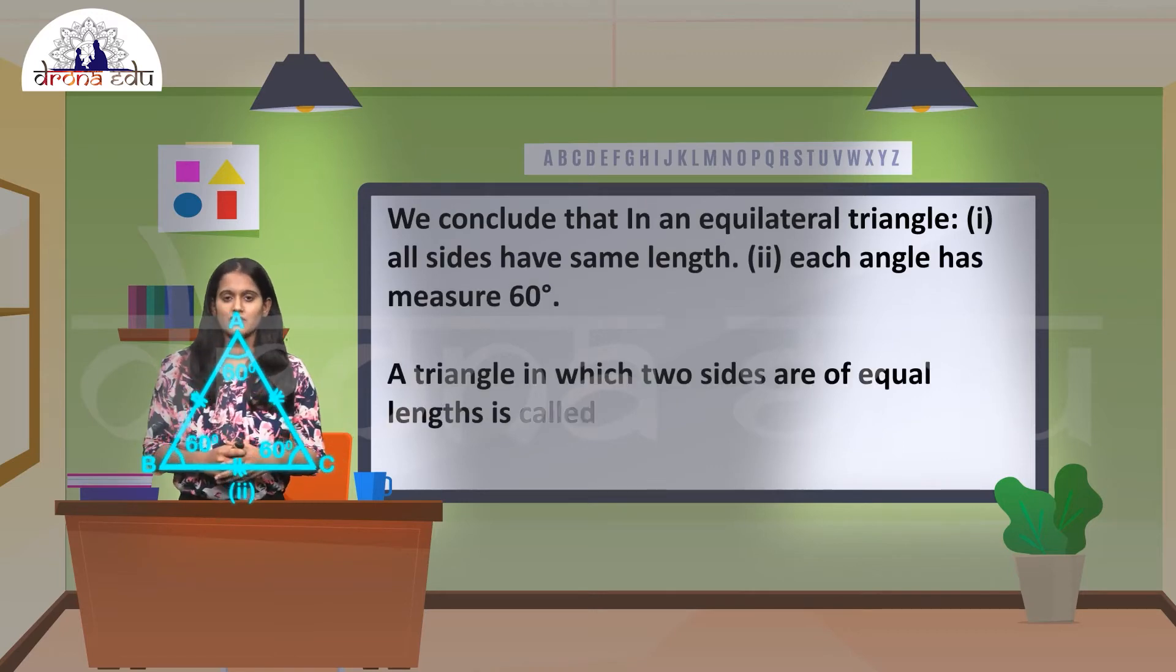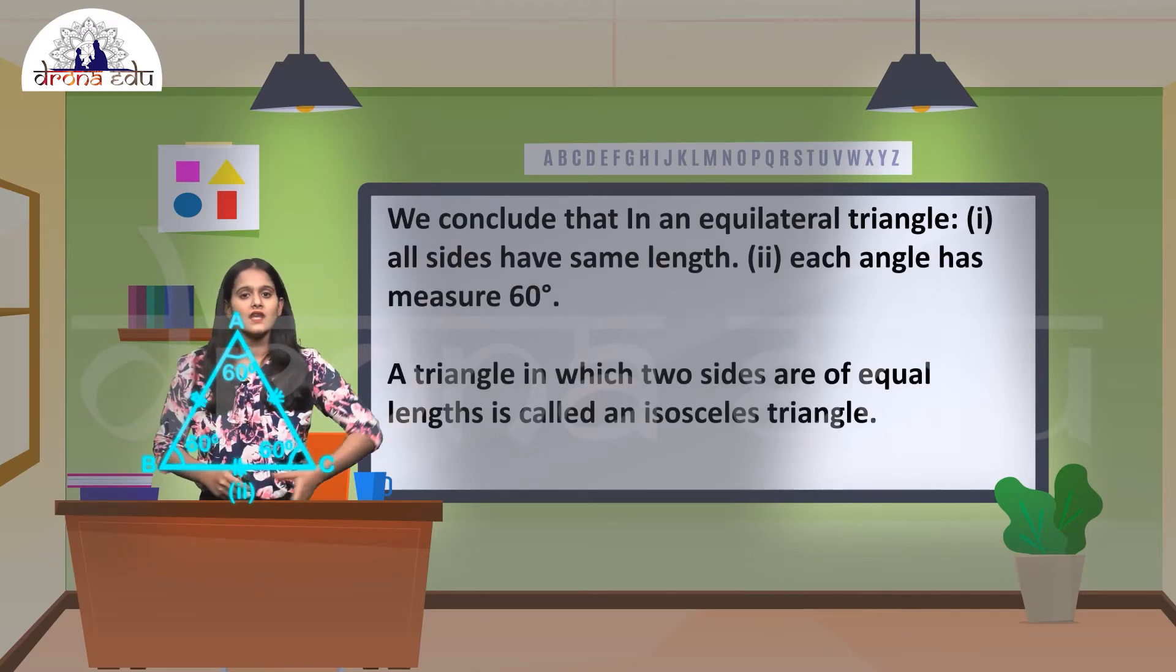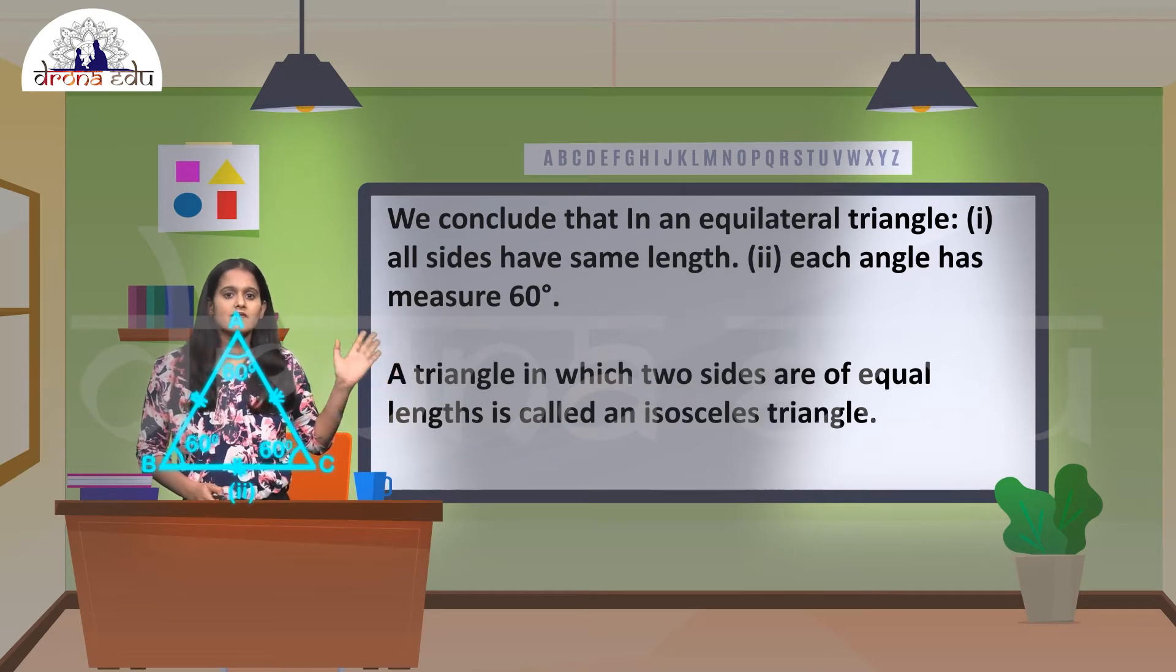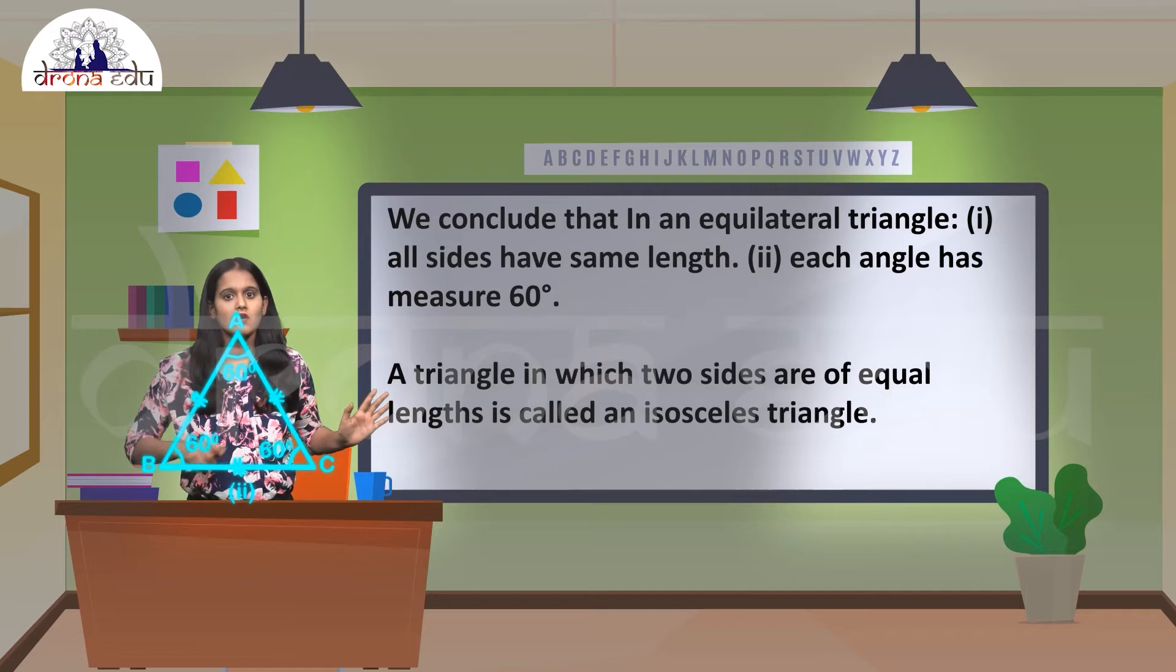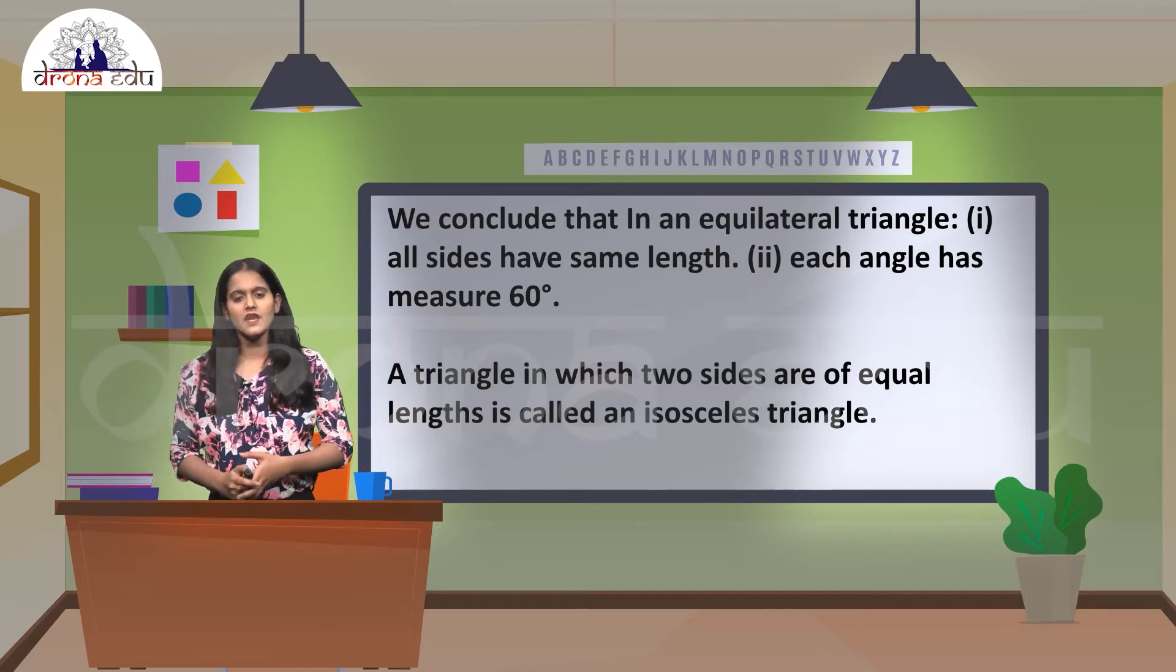Yes, it is. So from this we can conclude that in an equilateral triangle, all the sides have the same length and each angle will measure 60 degrees because all the angles will be equal.